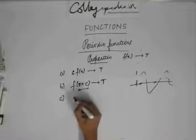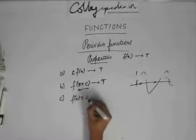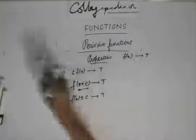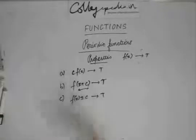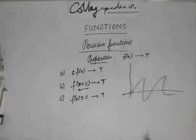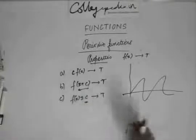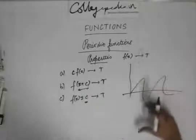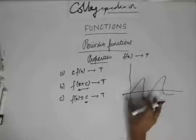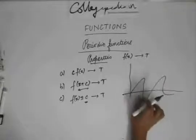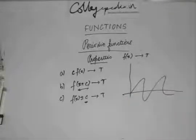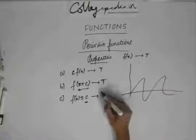The next property is: f(x) ± c is also periodic with the same period t. If I add a constant c to a function, the function gets shifted in the up or down direction — only a shift in the y-direction. There is no expansion or contraction along the x-axis, so the period of the function doesn't change; it remains t.